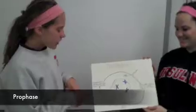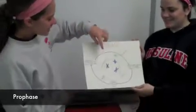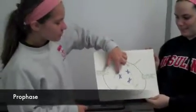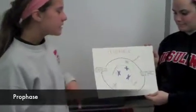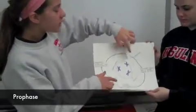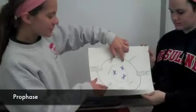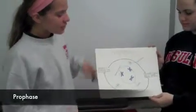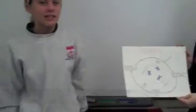Prophase: chromatin condenses into chromosomes. Centrioles separate and the spindle begins to form. The nuclear envelope finally breaks down.